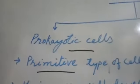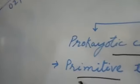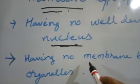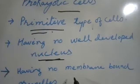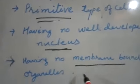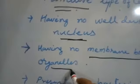The first is prokaryotic cells. Prokaryotic cells have no well-developed nucleus. They also have no membrane-bound organelles. These are the defining characteristics of prokaryotic cells.